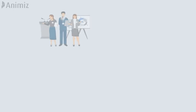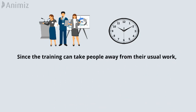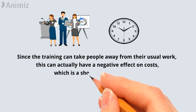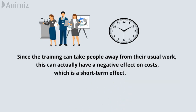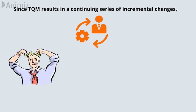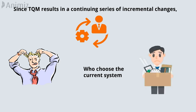Disadvantages of total quality management: TQM requires a considerable training period for those employees involved in it. Since training can take people away from their usual work, this can have a negative effect on costs in the short term. Additionally, since TQM results in a continuing series of incremental changes, it can develop a negative reaction from employees who prefer the current system or who feel they may lose their jobs because of it.